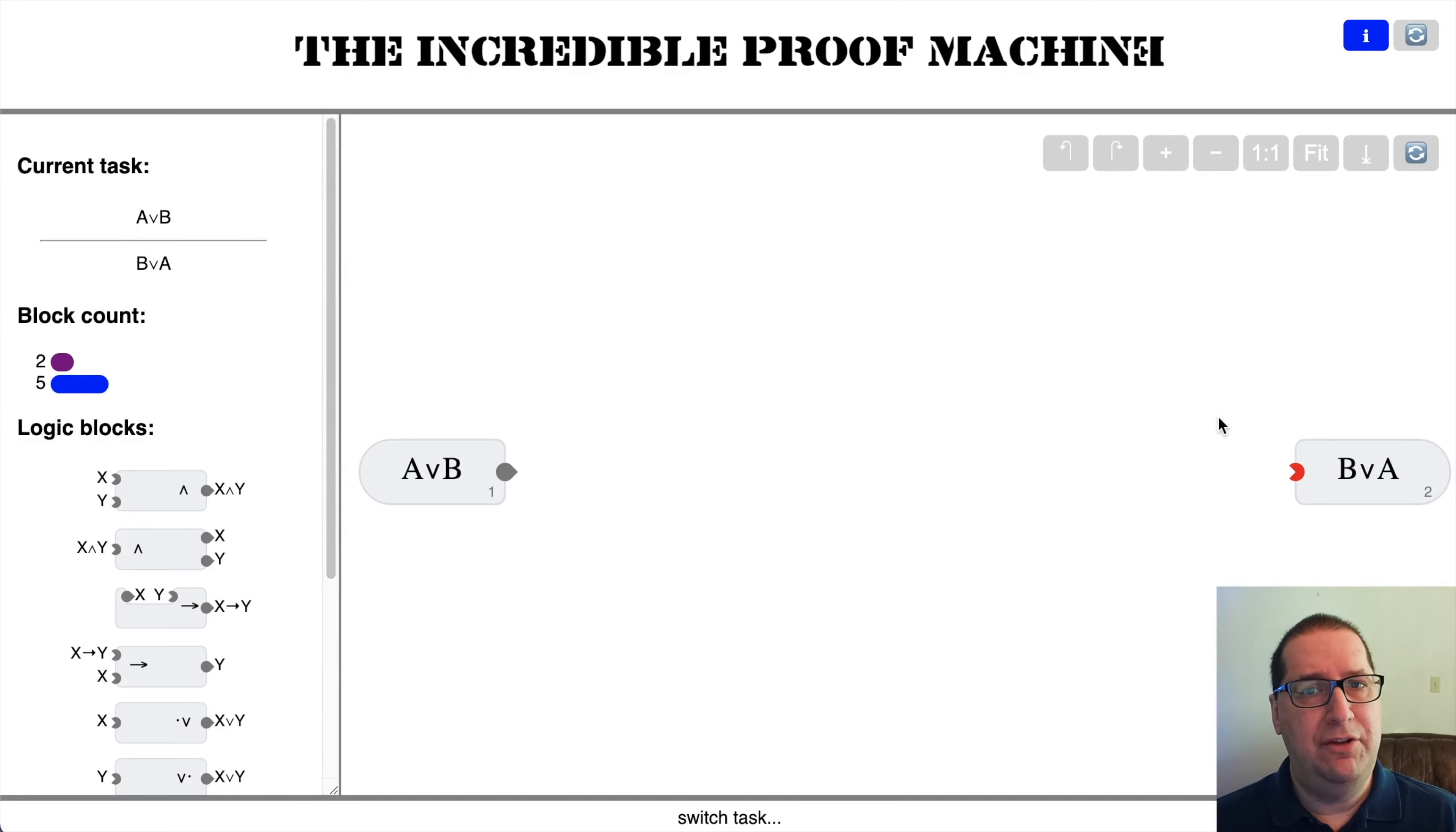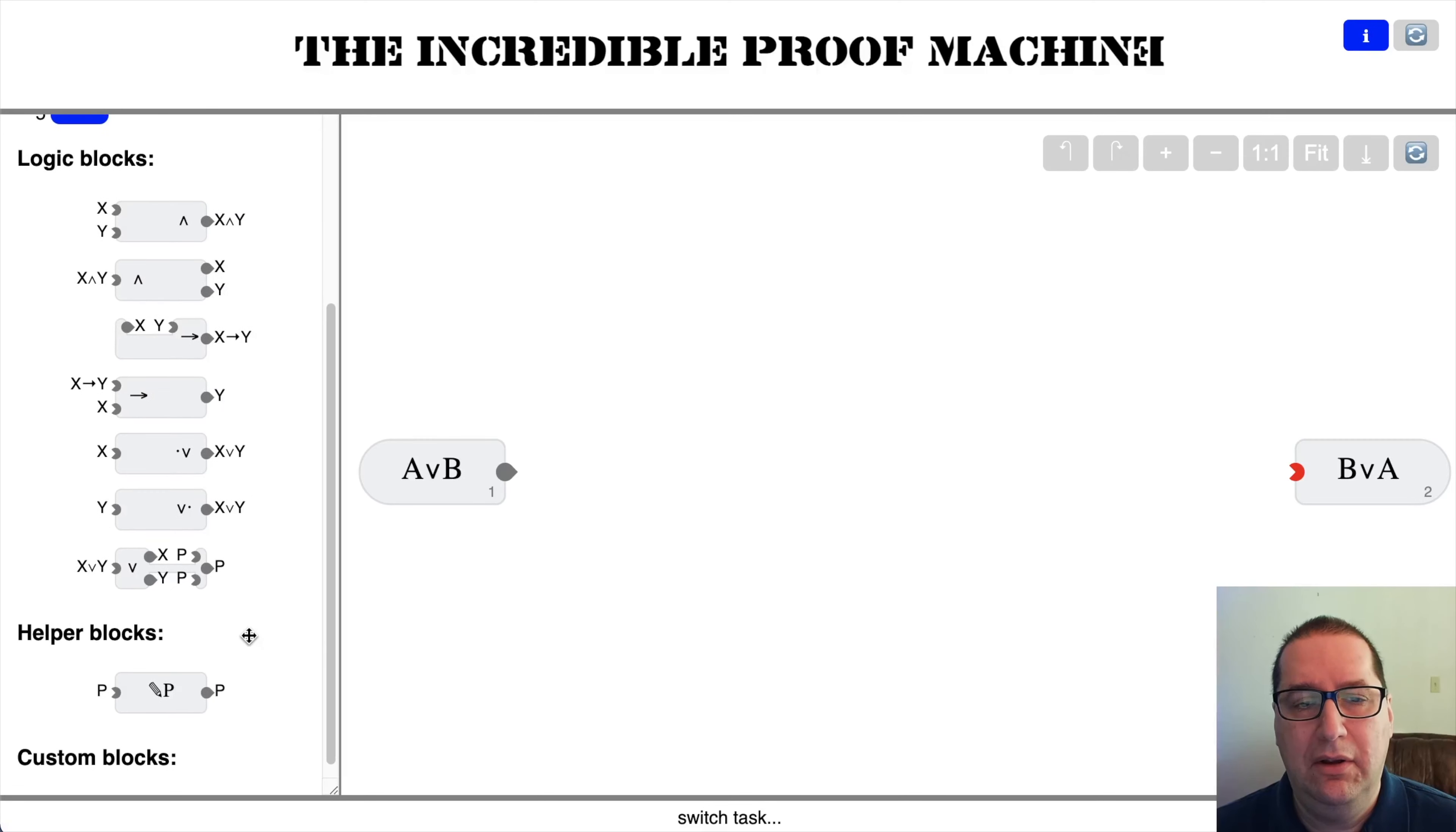Given A, prove A or A. I think that this one you could solve via monkeys and typewriters - there aren't too many options there. First interesting one by my standards: we need to prove that OR is commutative, A or B equals B or A. For this one, we're going to have to introduce this scary looking block, which is the disjunction elimination rule. And I think we're going to actually try and get B or A out of the back end of it.